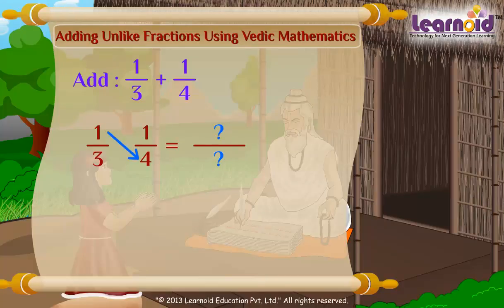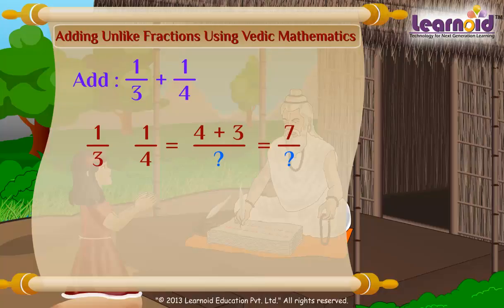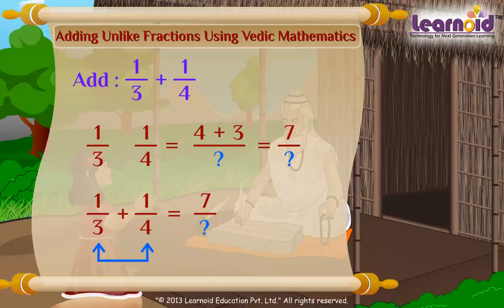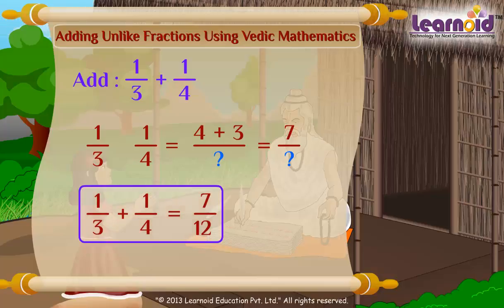1 into 4 — write 4 here, and 1 into 3 — write 3 here. So the numerator is 4 plus 3, which equals 7. To get the denominator of the sum, multiply both denominators: 3 into 4, which is 12. So, 1 by 3 plus 1 by 4 is equal to 7 by 12. It's very simple.